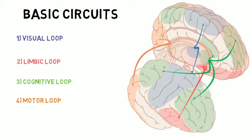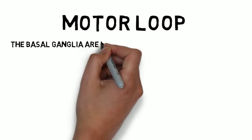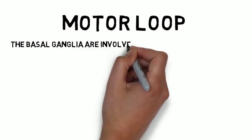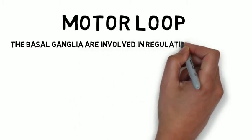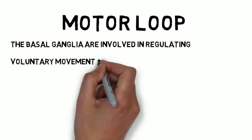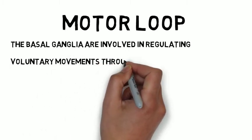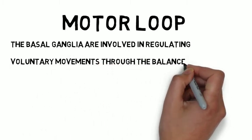Today we will be focusing on the motor loop. Through the motor loop, the basal ganglia act to modulate motor movements through the balance of two pathways: the direct pathway and the indirect pathway.